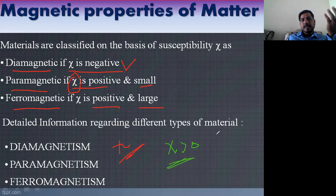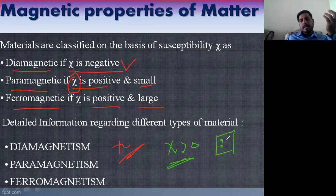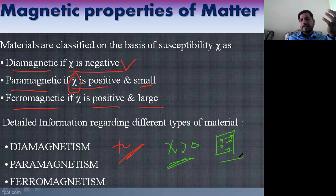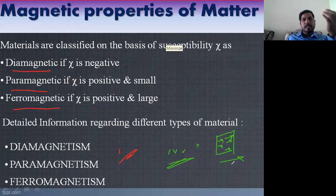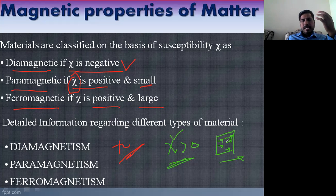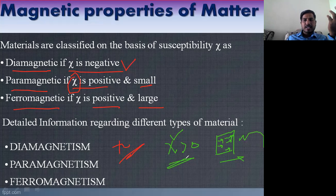Magnetization is the alignment of all dipoles in a particular direction. A dipole has a north and south pole. In a given material, if all magnetic dipoles align in the field direction, we call it a magnetized material. If chi is greater than zero, dipoles align in a particular direction and magnetization is high. M indicates magnetization.